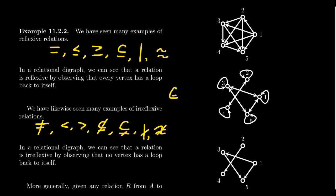The element-containment symbol ∈ is never reflexive because A ∈ A is forbidden by the axioms of set theory to avoid Russell's paradox. So the negation ∉ is actually a reflexive relation, which means its negation (∈) is irreflexive. It's important to include that in the list.